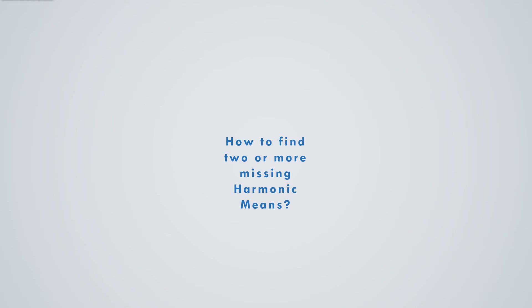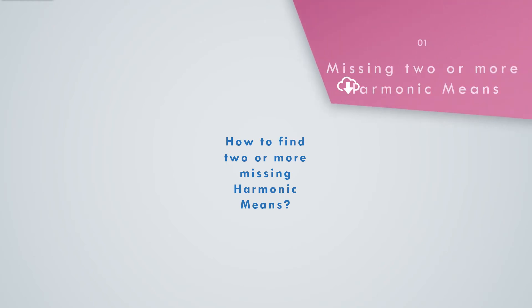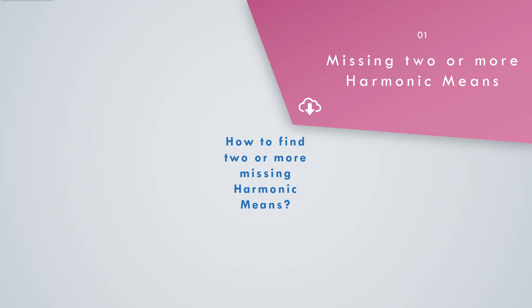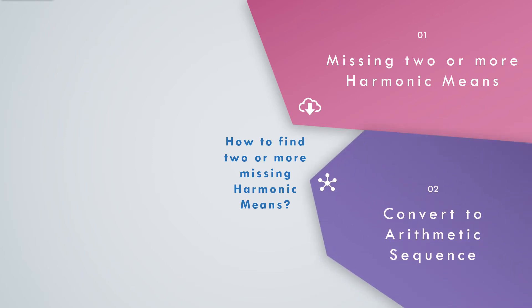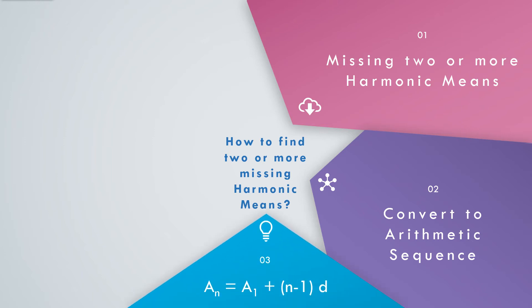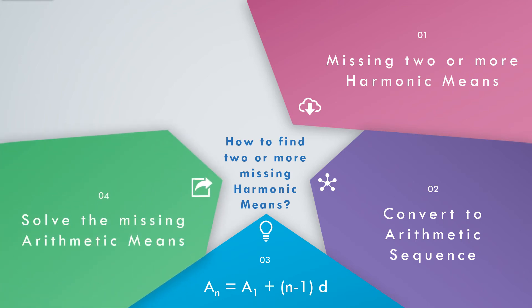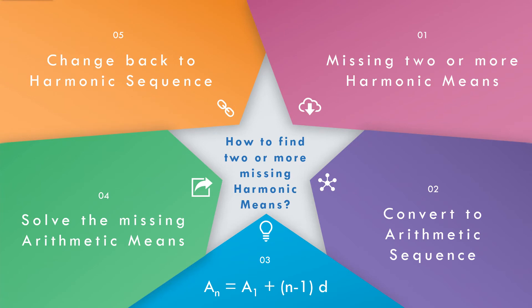What is the solution to solve for harmonic means when the missing term is 2 or more? We need to get the reciprocal of the harmonic sequence, then proceed to arithmetic sequence. After getting the arithmetic sequence, use the formula a_n = a_1 + (n − 1)d to solve for the common difference, then solve for the missing arithmetic terms. Finally, get the reciprocal of the missing terms — those are the harmonic means.